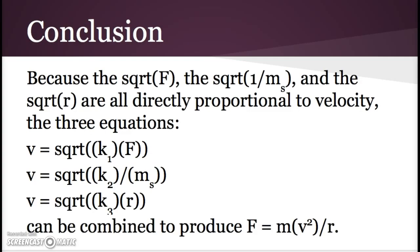In conclusion, because the square root of F, the square root of 1 over m_s, and the square root of r are all directly proportional to velocity, the three equations can be combined to produce F equals m v² over r. When we substitute F as ma, we can cancel the mass variable and get a equals v² over r.